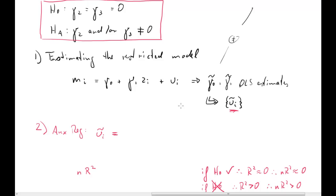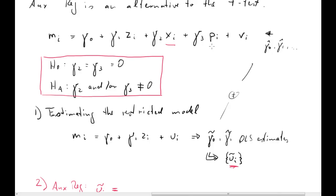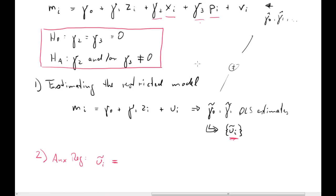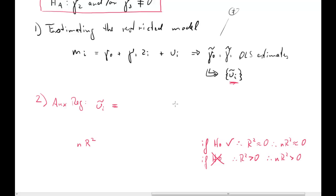If the null hypothesis were true, then going back to the full model, xi and pi should be irrelevant because those coefficients are equal to zero. In that case, these variables will go into the error term of the restricted model, but with a zero coefficient, they essentially do not affect the error term. So if the null hypothesis were true, we could put xi and pi as explanatory variables on the right-hand side of this auxiliary regression. Our first condition seems to be met by xi and pi.